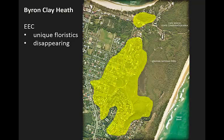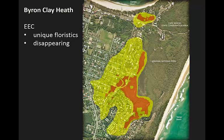The Byron Bay Clay Heath is listed as an endangered ecological community because it has a unique floristic make-up found nowhere else, and it is in rapid decline due to past clearing, vegetation change, and environmental weeds. At the time of European settlement, the community covered around 75 hectares, shown in yellow. The orange area shows its current extent; however most of this is under encroaching forest, leaving only the dark red areas of original open heathland at around only 5% of its original distribution.